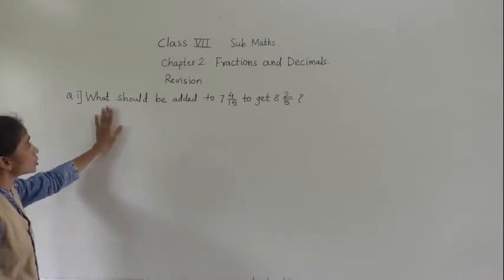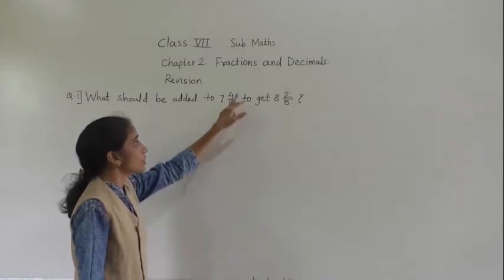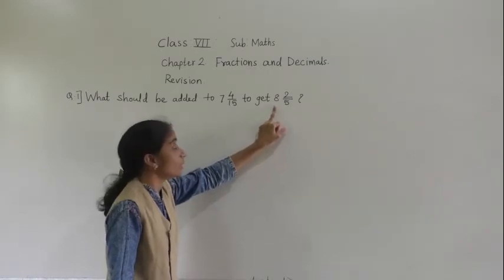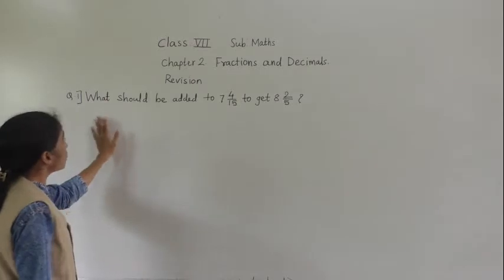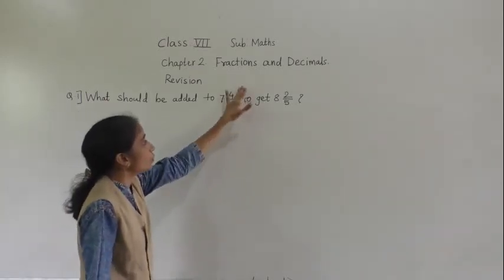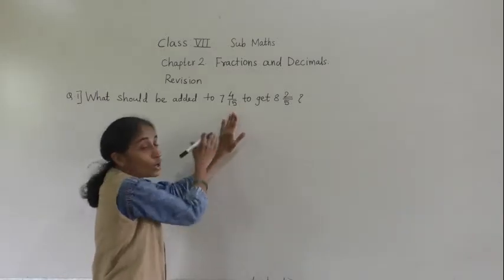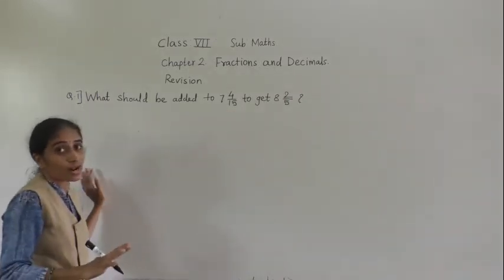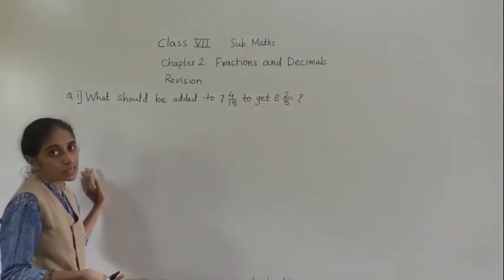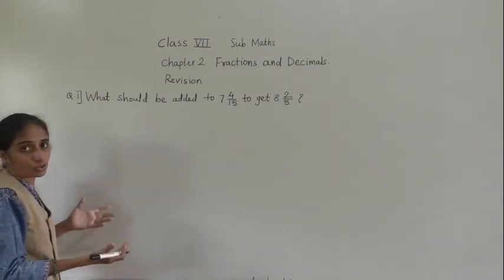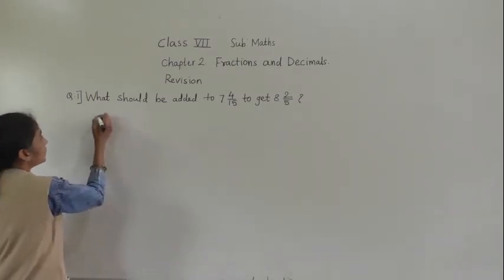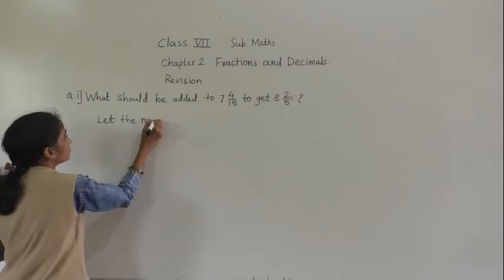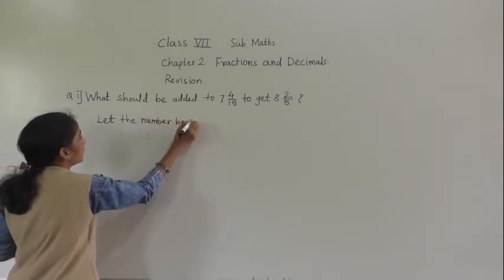Now see this question: what should we add to 7 integer 4 upon 15 to get 8 integer 2 upon 5? What should we add to 7 integer 4 upon 15 — that number we will consider x. Let the number be x.